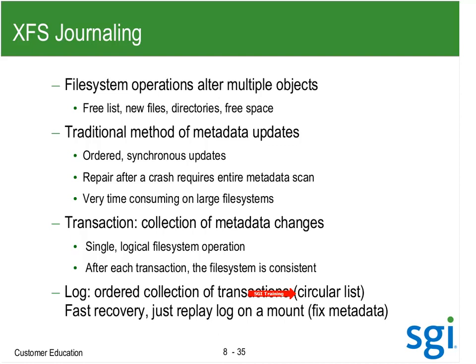Once we've grouped metadata changes into a transaction, we write that transaction to the disk buffer and then the file system is coherent. A log is an ordered collection of transactions — it's a circular list. If you're heavy metadata intensive, you might need a larger buffer and a larger log. Fixing a file system occurs on the mount — XFS repair is a last resort. The mount looks at the journal; if the file system was not shut down cleanly, the log is in an unspecified state and we replay the log on mount.